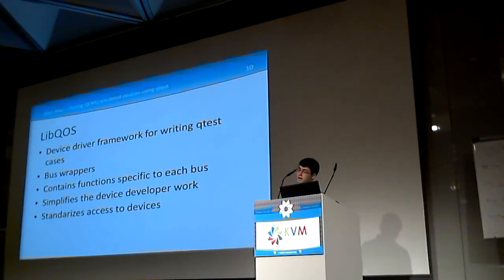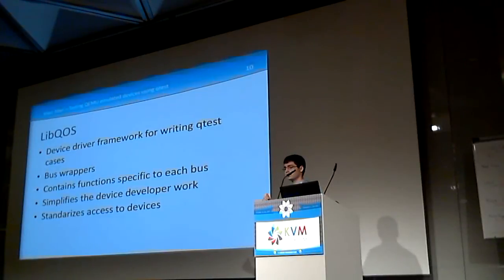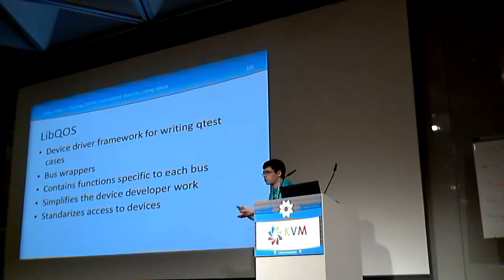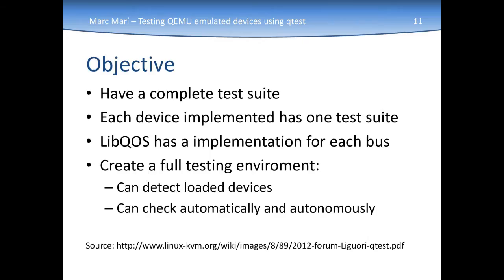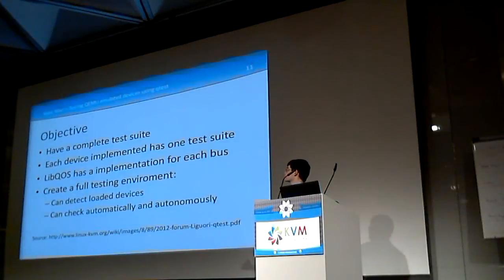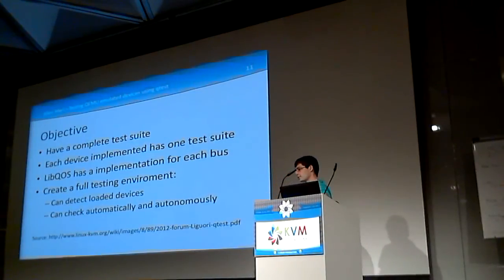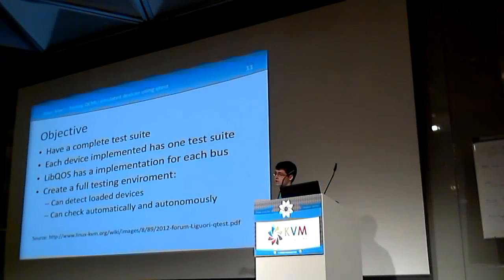If you are working on a PCI device or a USB device, there are a number of common steps that you have to perform every time you want to run a device, and these can be simplified a lot. It's not necessary for the developer to know how to do those steps. The objective of all this is to have a complete test suite where each device has one test suite, each bus has a LibQOS implementation, and this full testing environment can detect what devices are loaded and perform the tests automatically and autonomously.